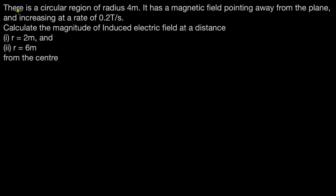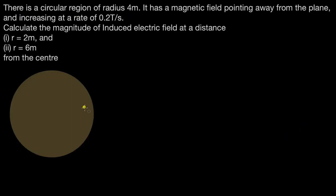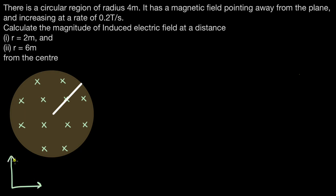Let's think about what this circular region of radius 4 meters could look like. The radius is 4 meters and it has a magnetic field pointing away from the plane of the screen, increasing at a constant rate of 0.2 teslas per second. We can write this as dB/dt, the rate at which the magnetic field is changing, equal to 0.2 teslas per second.